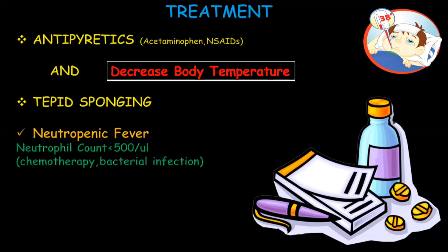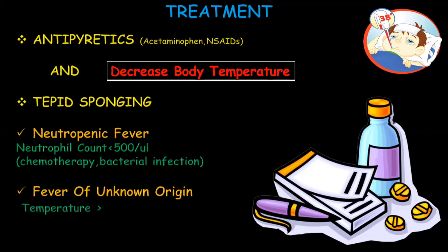The etiology of neutropenic fever includes chemotherapy, bacterial infection, candidiasis, and herpes virus infection. In fever of unknown origin, the temperature is greater than 38.3°C, recorded on multiple occasions, lasting for greater than three weeks, with no clear etiology.